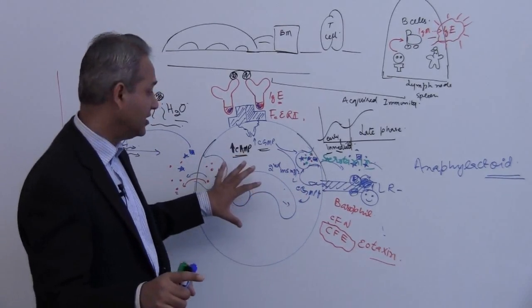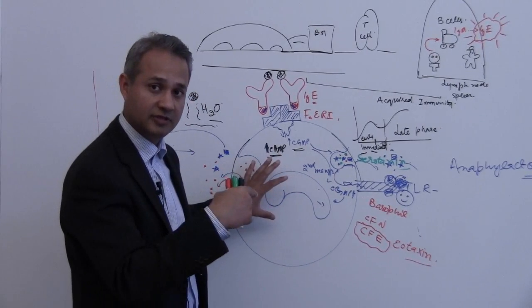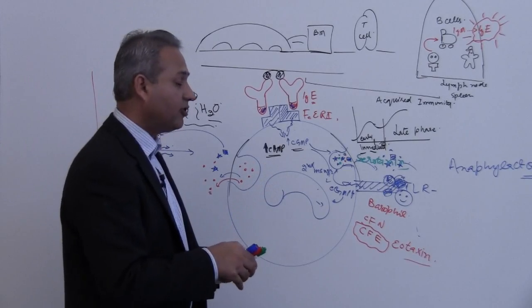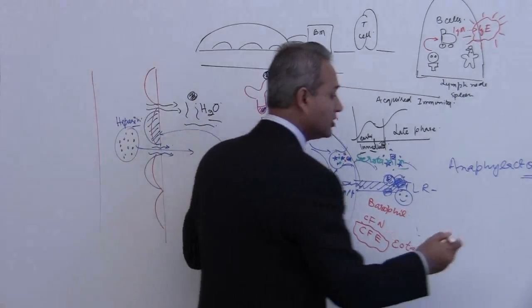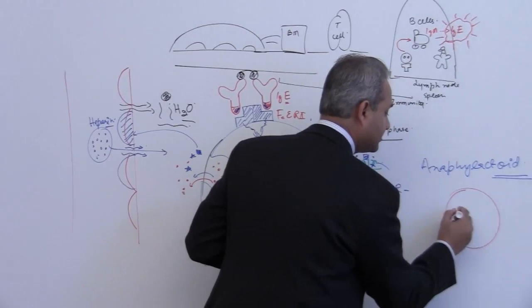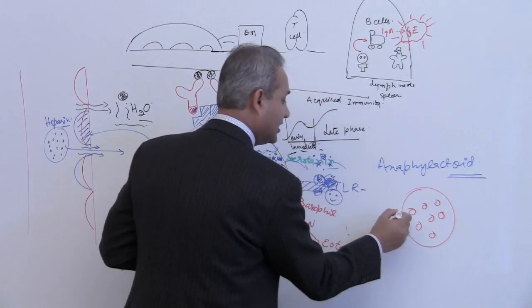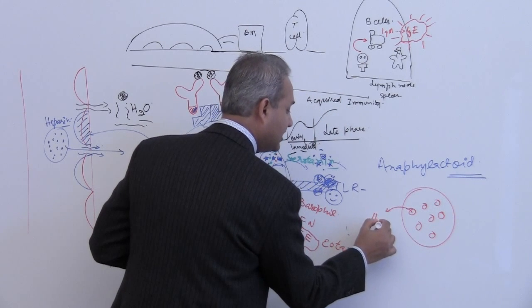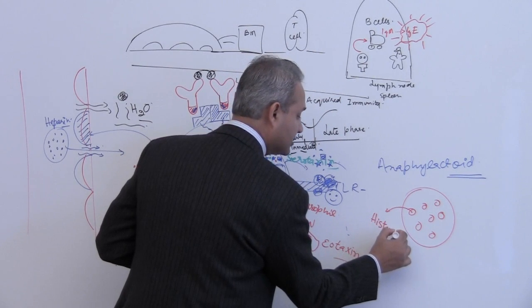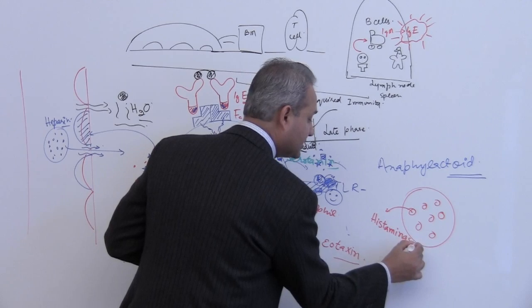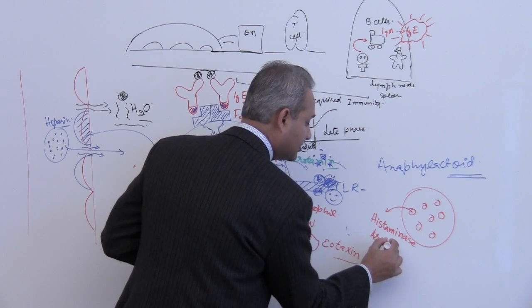So we are still on the basophils and mast cells. What do eosinophils do? Eosinophils are brought in here and in their granules they have histaminase—do not forget this please—histaminase and aryl sulfate. They have two substances.